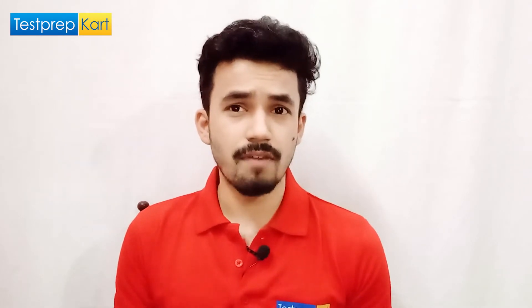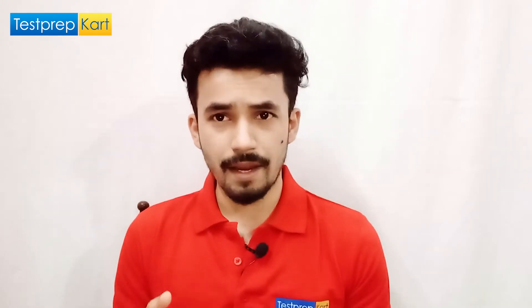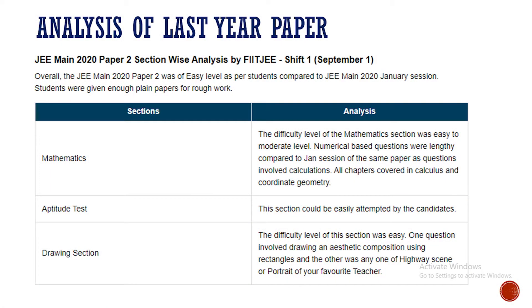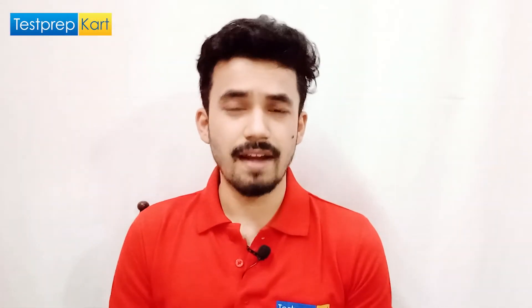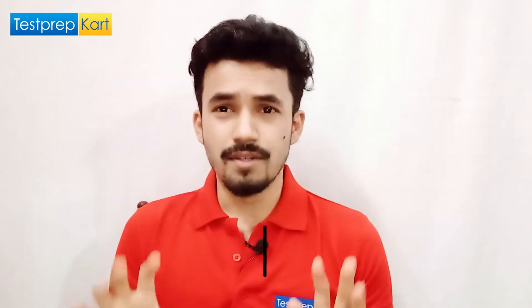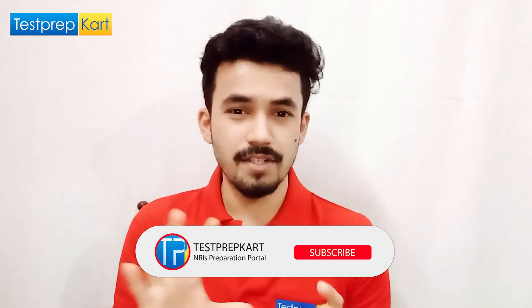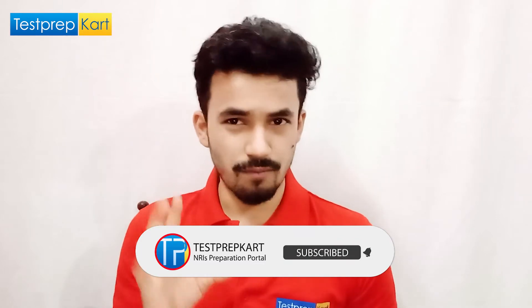In the aptitude test, the section was quite simple and fairly easy. In the drawing section, the difficulty level was easy — one question involved drawing a city composition using rectangles, a highway scene or a portrait of your favorite teacher. Since drawing is handwritten, you can easily manage this part. Overall, last year's paper was fairly easy, and if you were targeting B.Arch from top colleges like IITs, NITs, or SPAs, you could have cracked it.